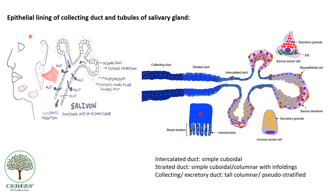Next question: what type of epithelium lines the collecting duct and tubules of the salivary gland? The functional unit of the salivary gland is called the salivon. It comprises acini, which can be serous or mucous, producing their respective secretions. Myoepithelial cells cause contraction of the acinar cells to propel fluid into the duct. The duct is lined first by the intercalated duct — simple short cuboidal cells. The fluid produced here is isotonic.